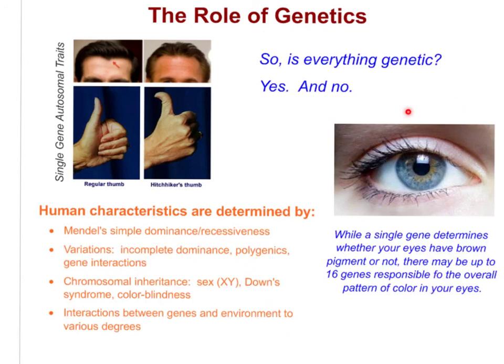Here is just an example: although sometimes we simplify eye color, there may be up to 16 genes responsible for the overall pattern of color in your eyes. There is a simple dominant-recessive component — brown eyes are dominant and blue eyes are recessive — but there are also other things like flecks of brown and other shades and variations of coloring involving multiple genes. So it is not quite as simple as what we've just discussed, but we'll be talking about that further in the unit.